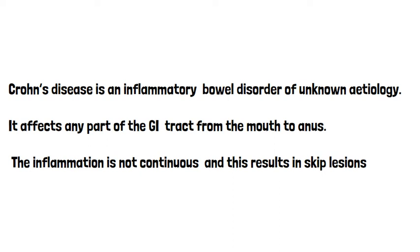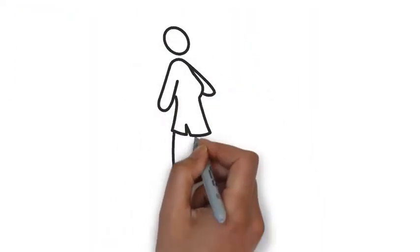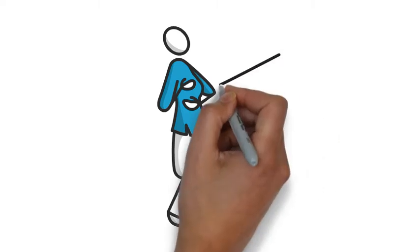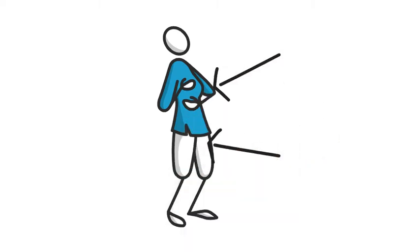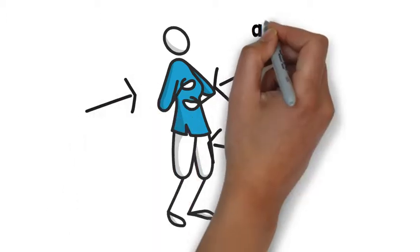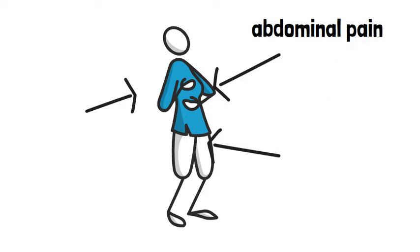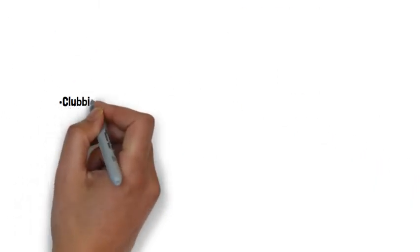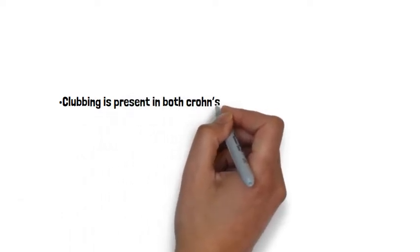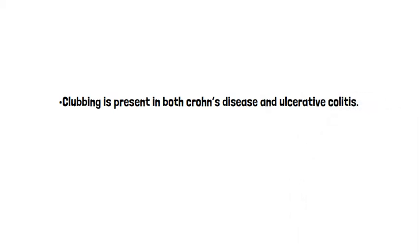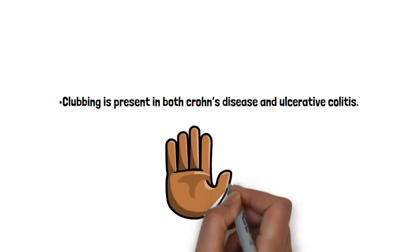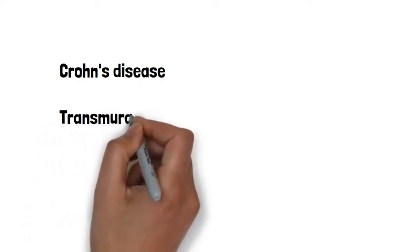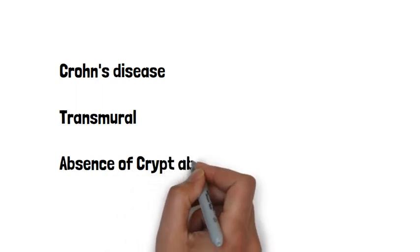Looking back at the question, we see that the man is a 20-year-old, and Crohn's disease actually has a bimodal distribution. This means it's more common in the 14 to 40 age group and the 60 to 80 age group, and it will typically present with abdominal pain, diarrhoea and weight loss — very like the presentation in this question. Clubbing is present in both Crohn's disease and ulcerative colitis, so that was incorrect. Crypt abscesses are present in ulcerative colitis, and transmural inflammation, skip lesions and strictures are all features of Crohn's disease.